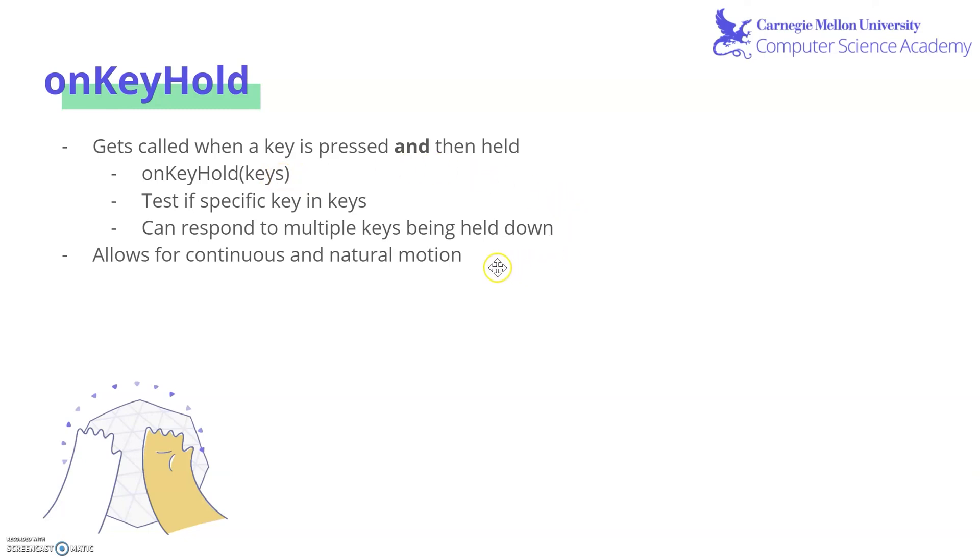So this actually allows for continuous and natural motion because we can attach the movement of a dot to an arrow key and make it look like it's continuously moving in one direction when that key is held.